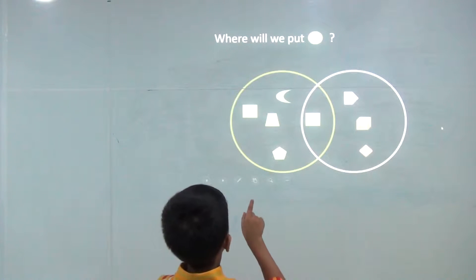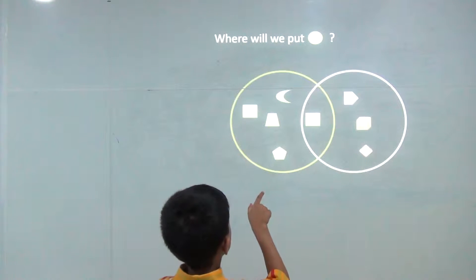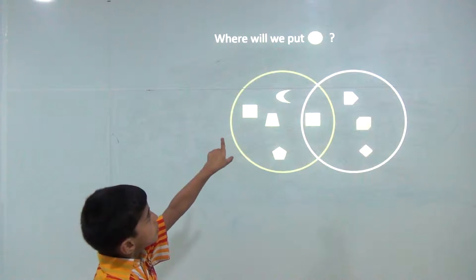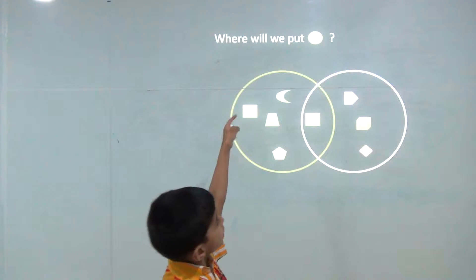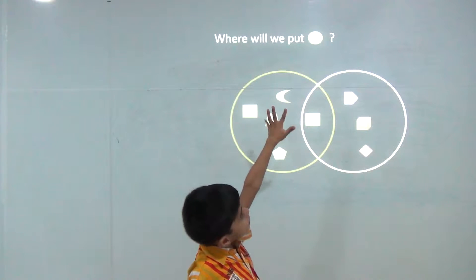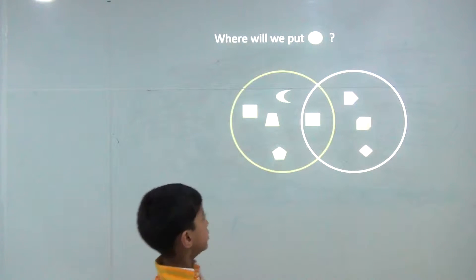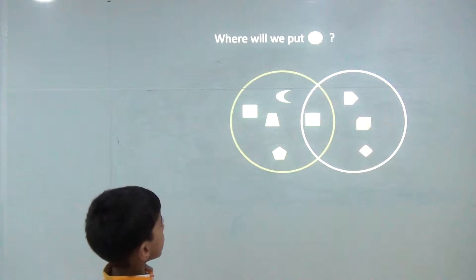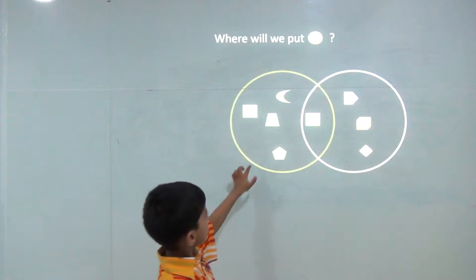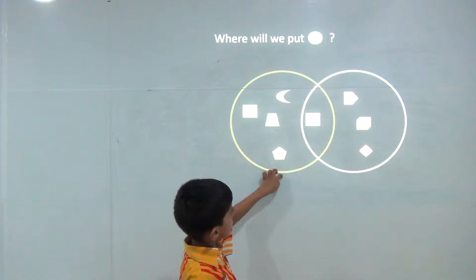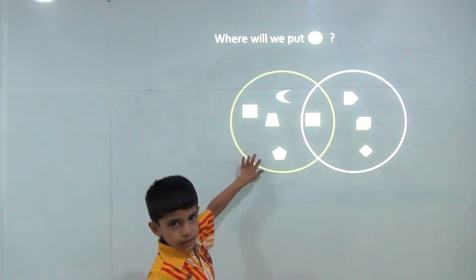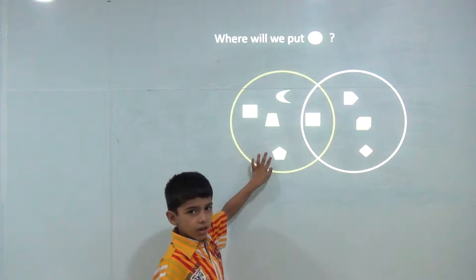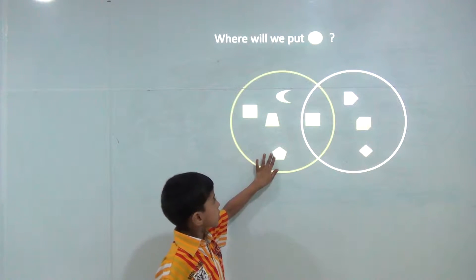Where will we put this? You can see its color is green, so we will keep it in this box, in this circle.